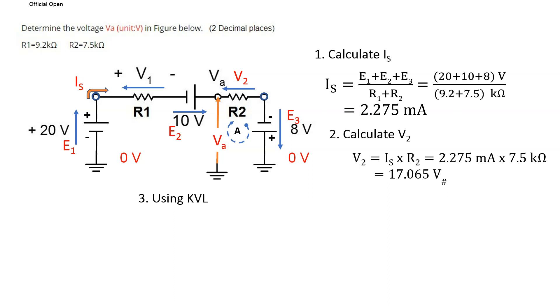We then use Kirchhoff voltage law around loop A to determine VA. VA minus V2 plus E3 equals zero. Rearranging, we will have VA equals V2 minus E3. That gives us a voltage of 9.065 V.